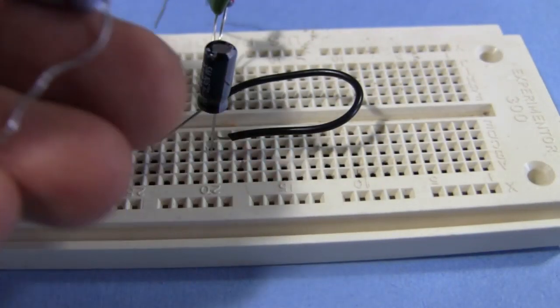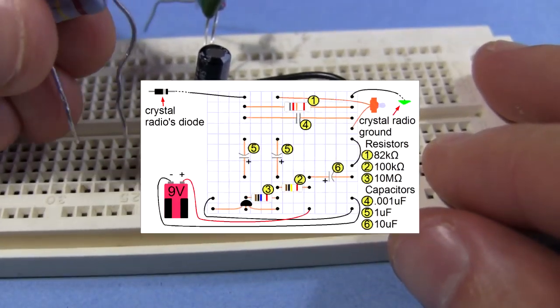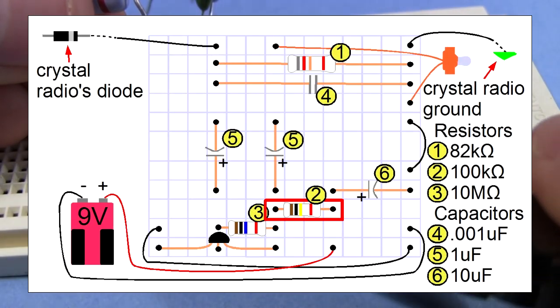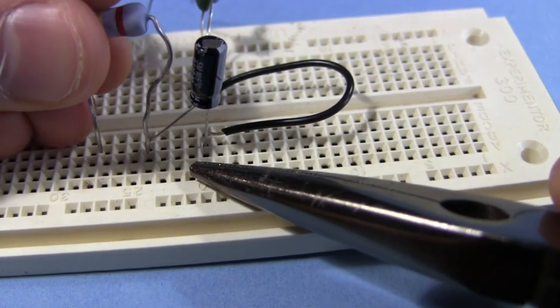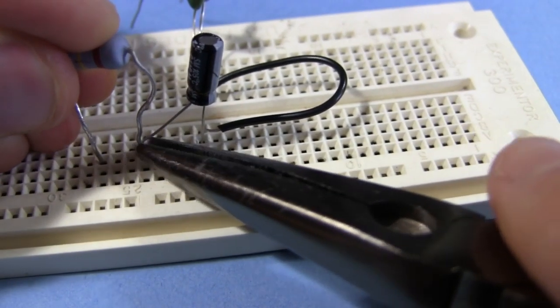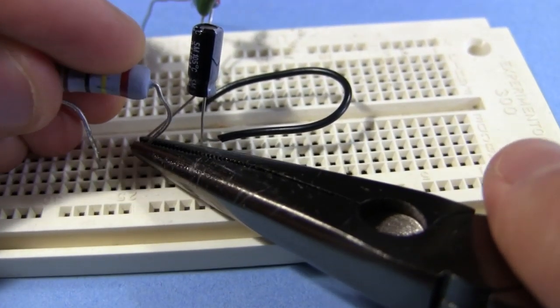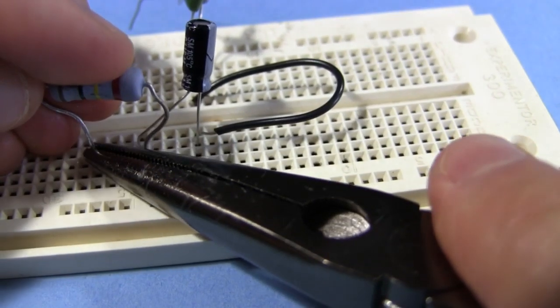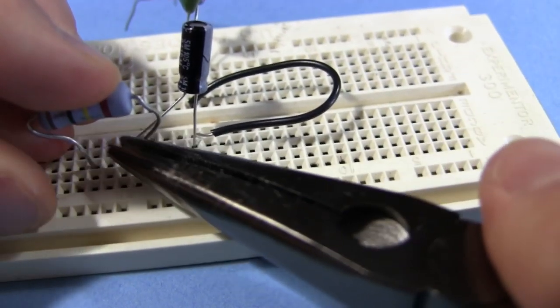Next up is the 100 kilo ohm resistor. Plug one end into the same row as the positive of the electrolytic capacitor, the 10 microfarad capacitor. And plug the other end about three holes away. So there's two between them.